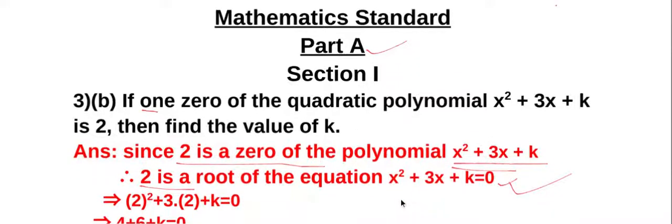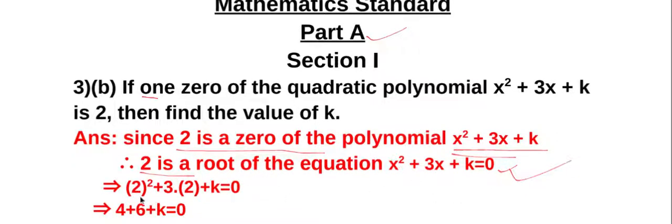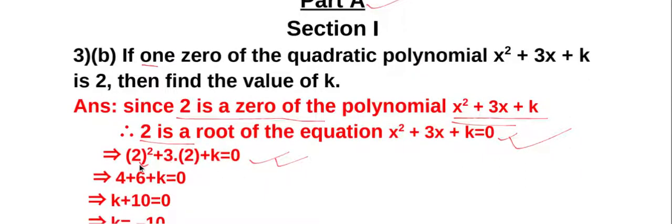Putting x = 2 in the equation: (2)² + 3(2) + k = 0. Two squared is 4, three into 2 is 6, plus k. That equals 4 + 6, which equals 10.